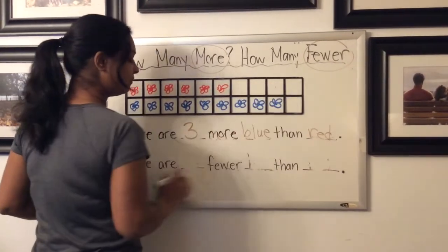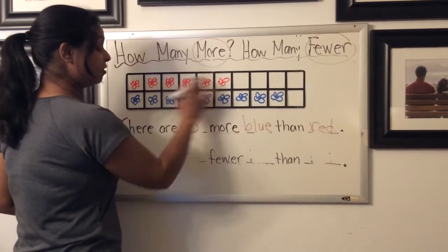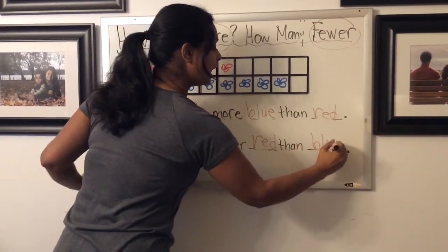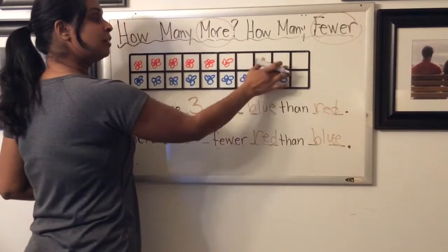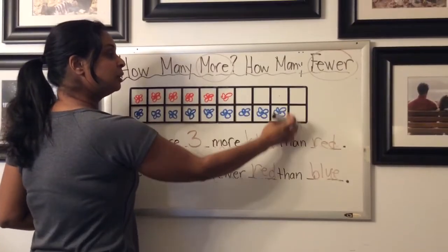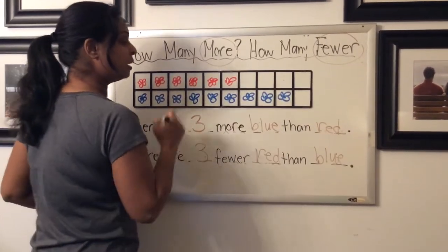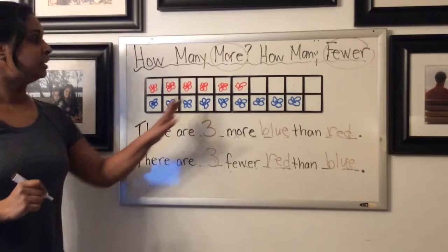And then when I fill out my fewer, I know this time there's fewer red than blue. How many fewer? Again, I'm going to look at those empty spaces. So blue comes to here and one, two, three fewer red than blue.